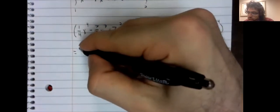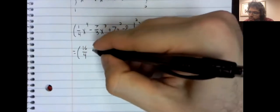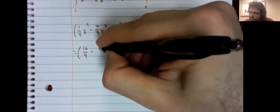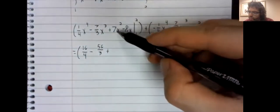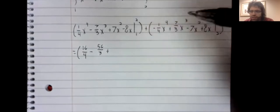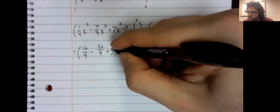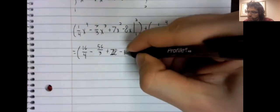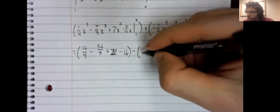Stick two in here: 16 fourths minus 8 times 7, 56 thirds, plus 4, 7 times 4, 28, minus 16. Stick one in here.